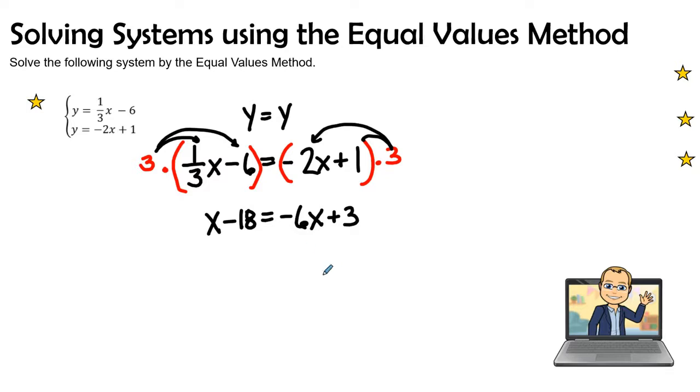So now let's get all our x's onto the left and all the numbers onto the right or the constants onto the right. So I'm going to add its inverse negative 6x plus 6x on both sides.